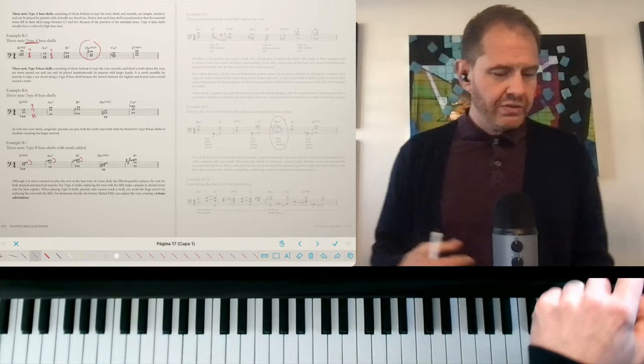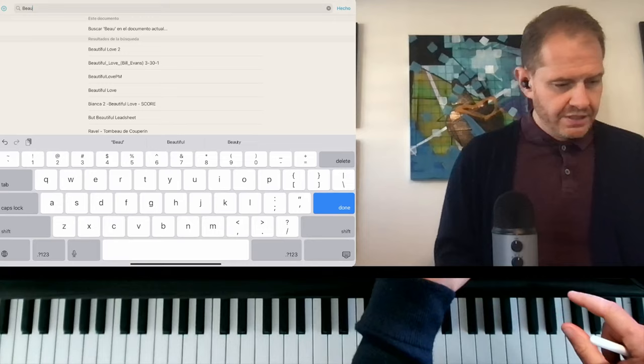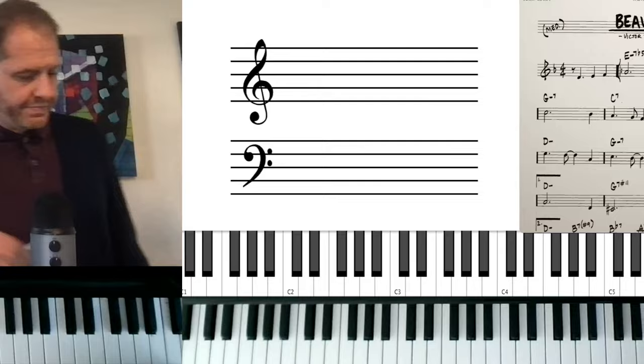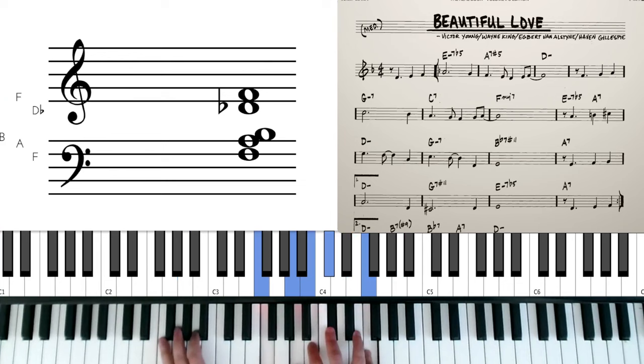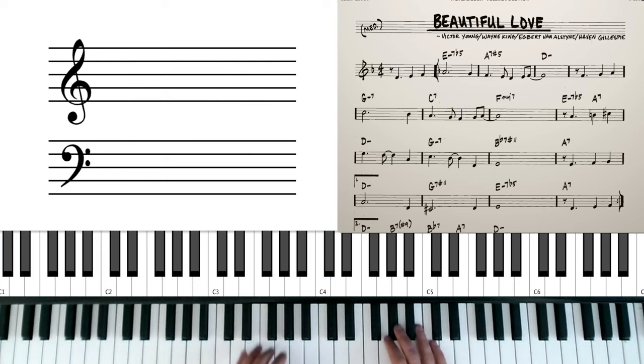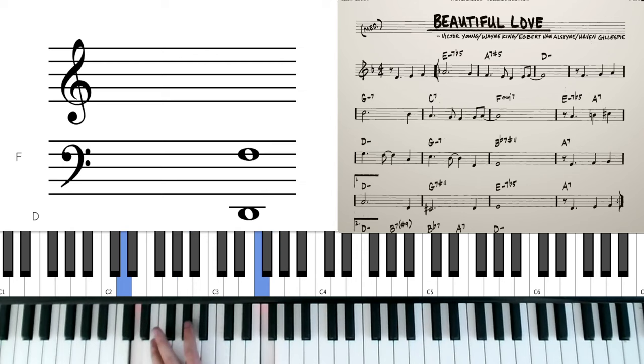So now let's see how this is going to work for Beautiful Love. So here's the lead sheet for Beautiful Love. If you've never heard this tune... So it starts with some 2-5-1s and I'm going to use these two-note bass shells. So I'm going to use a type A. That's the root and the third for E half-diminished. Then a type B. That's the root and the seventh for A7. And then back to a type A. Remember, we're going to alternate A, B, A when we're moving the circle of the fifths.